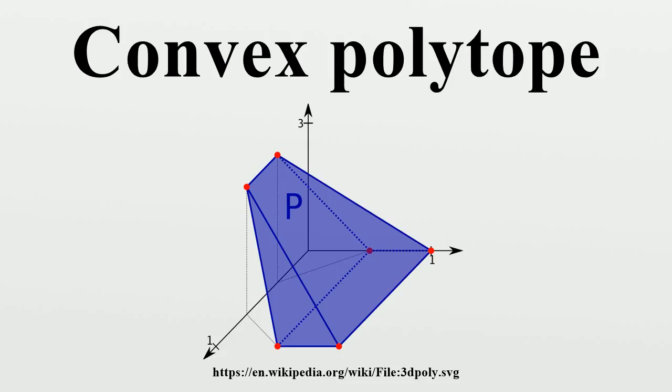The problem of deciding whether two three-dimensional or simple convex polytopes are combinatorially isomorphic can be formulated equivalently as a special case of the graph isomorphism problem.